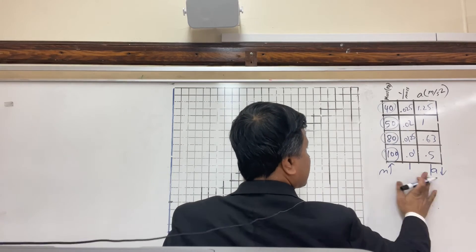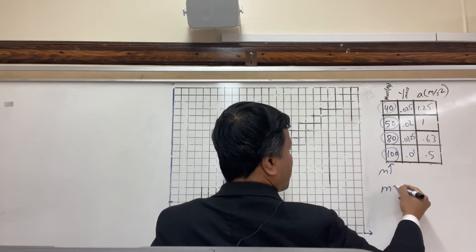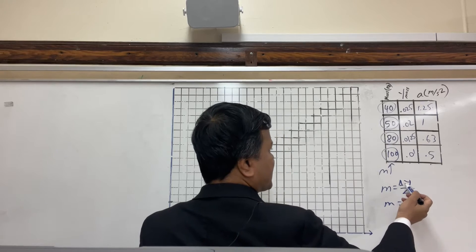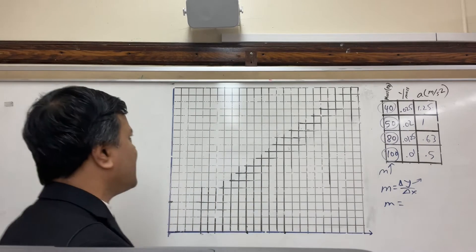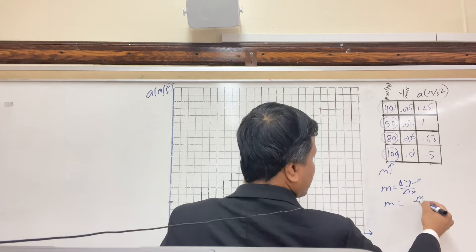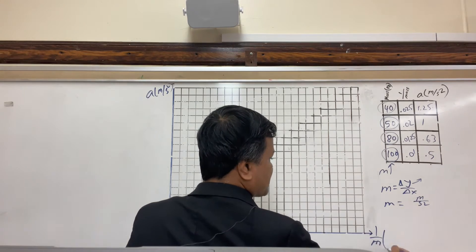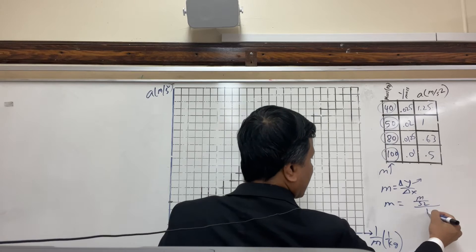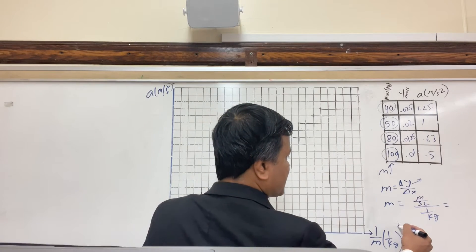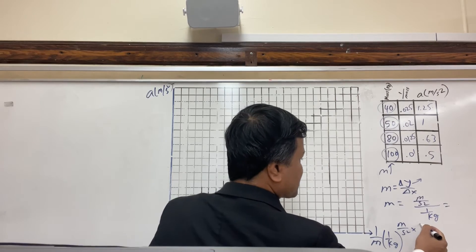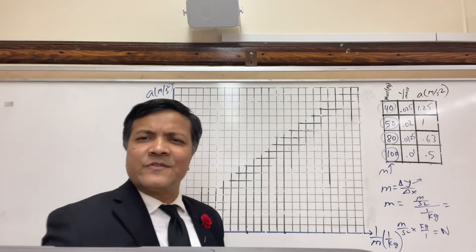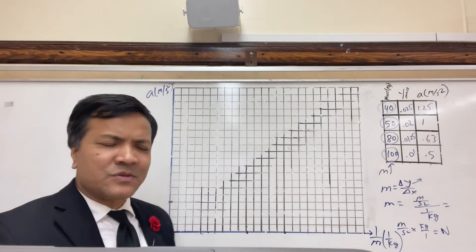The slope is delta y over delta x. So what is the SI unit for delta y? Delta y is our y-axis, which is acceleration — meters per second squared. Delta x is 1 over mass, so 1 over kilograms. So you get meters per second squared divided by 1 over kilogram. You flip it — kilogram over 1 — so you get kilogram·meter per second squared, which is Newtons, and what physical quantity has a unit of Newtons? Force.